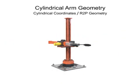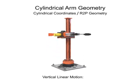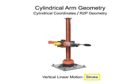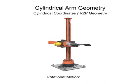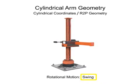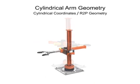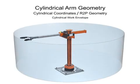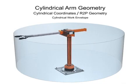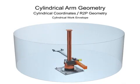Robotic arms with cylindrical geometry move linearly in two directions. The vertical linear motion is called stroke, horizontal linear motion is called reach, and rotational motion is called swing. Cylindrical geometry robots have a cylindrical work envelope. The advantage of this type of work envelope is a robotic arm reach that is deep at both the top and bottom of the stroke.